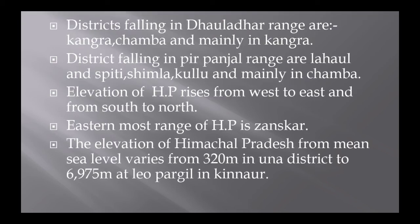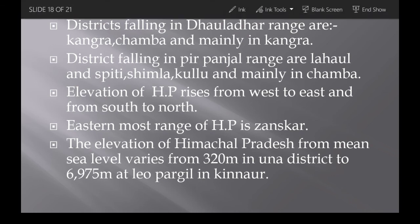District distribution by range: Dhauladhar range is found in Kangra and Chamba, but mainly in Kangra. Pir Panjal is found in Lahaul-Spiti, Kullu, and Shimla, but mainly in Chamba. The elevation of HP rises from west to east and from south to north. The easternmost range is Zanskar. Elevation from mean sea level varies from 320 meters in Una district to 6,975 meters at Leo Pargial in Kinnaur.